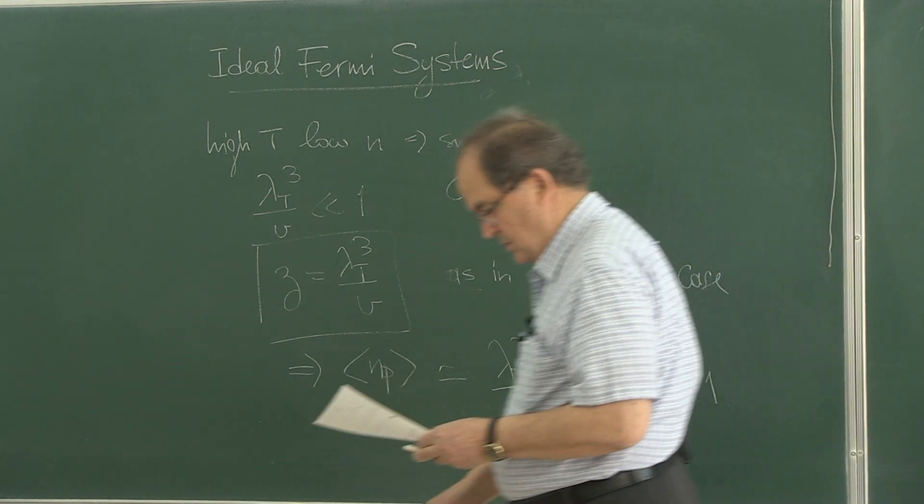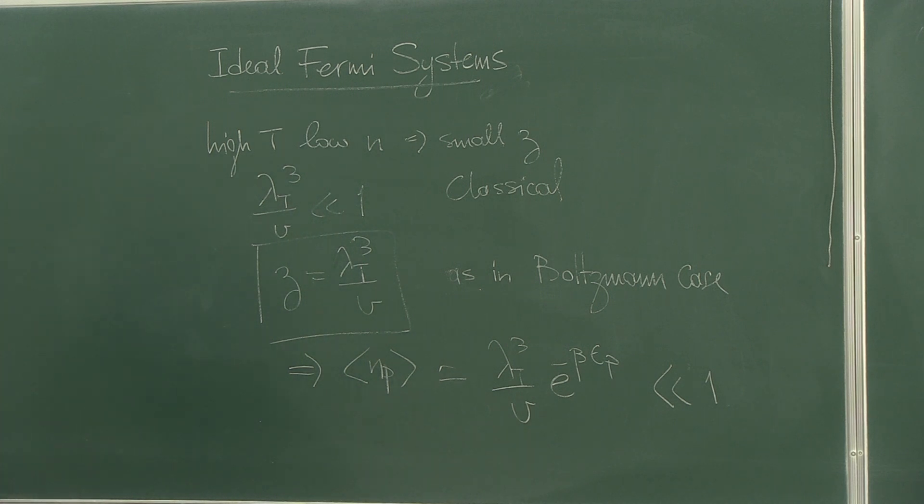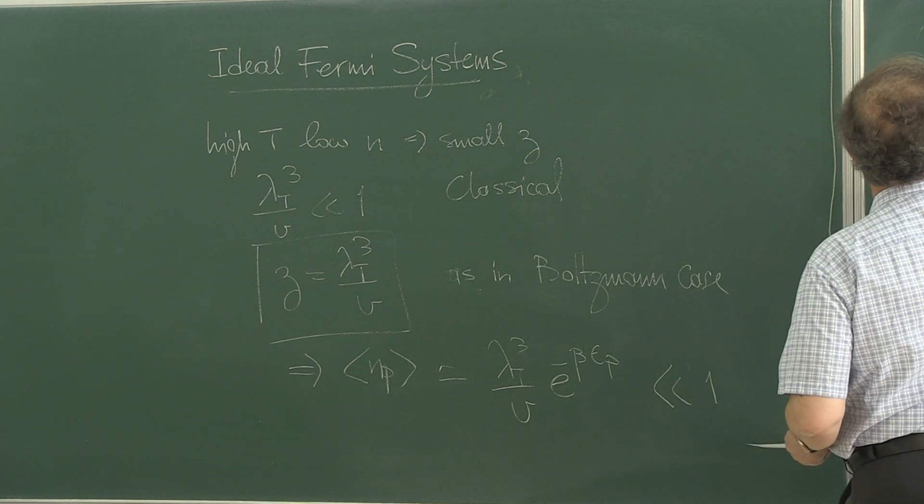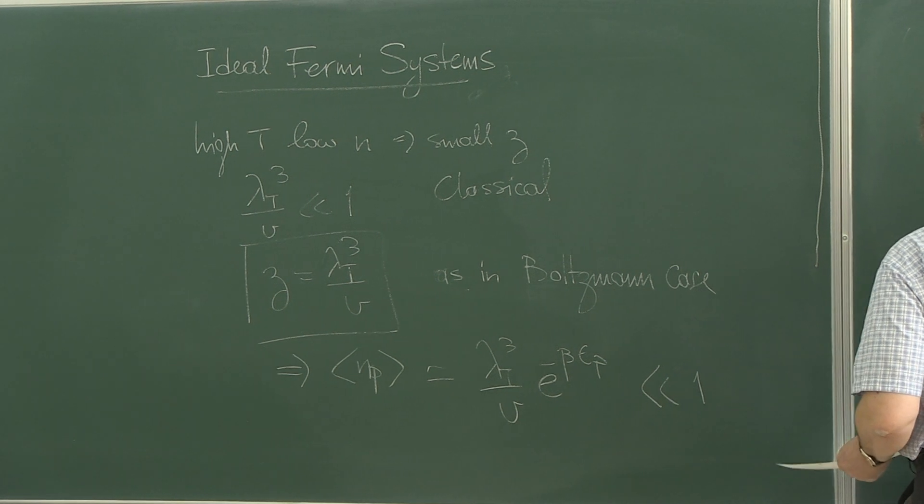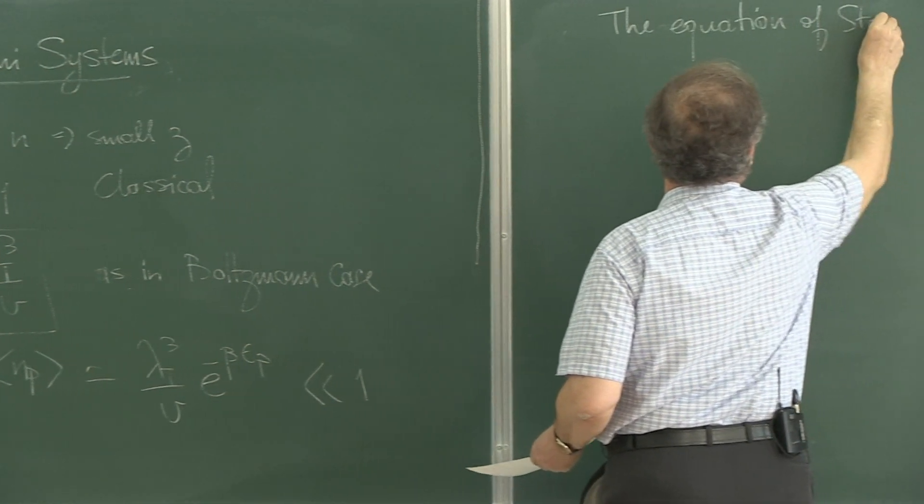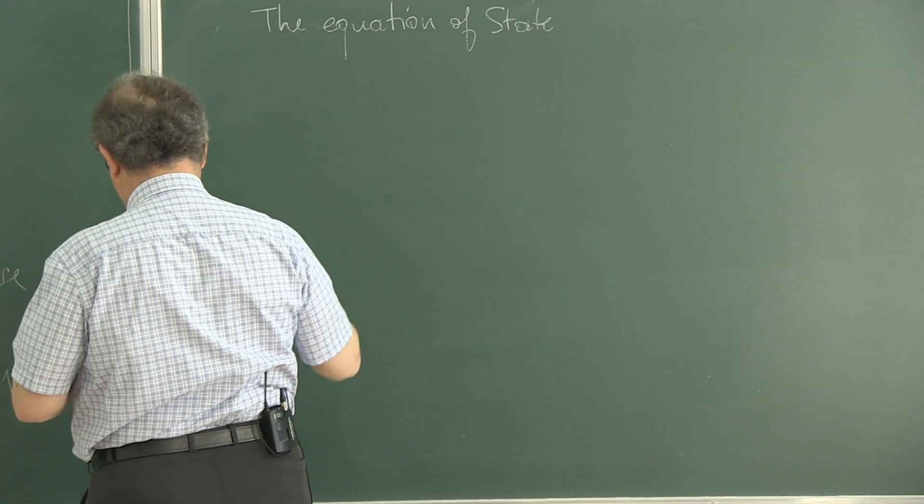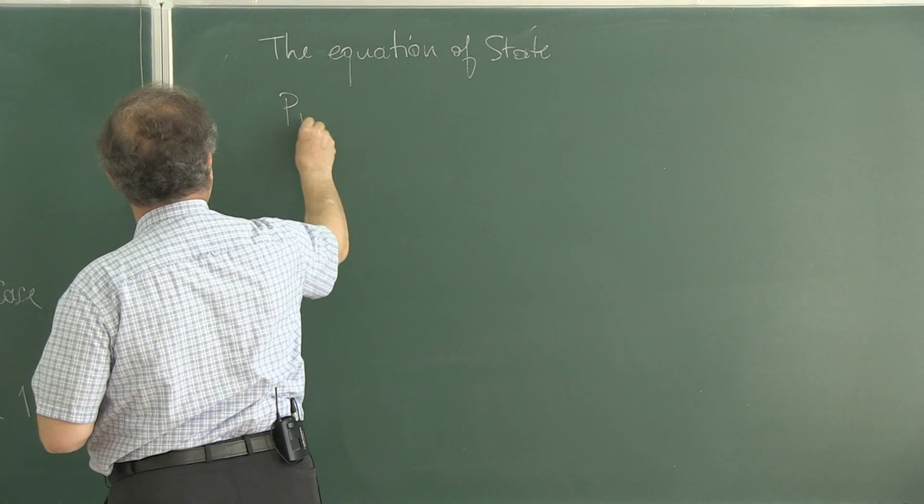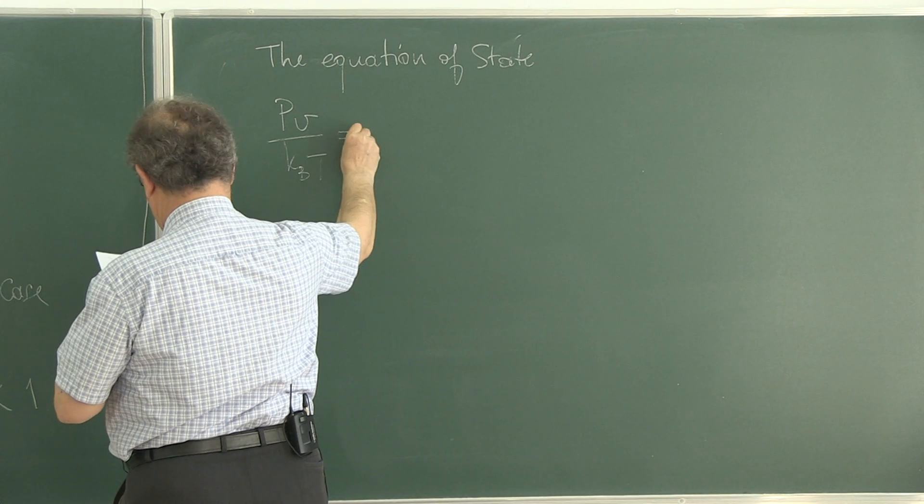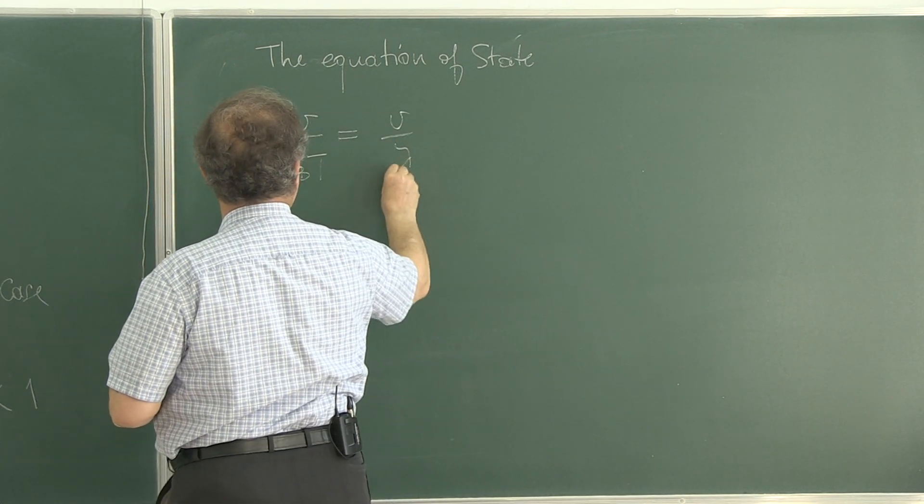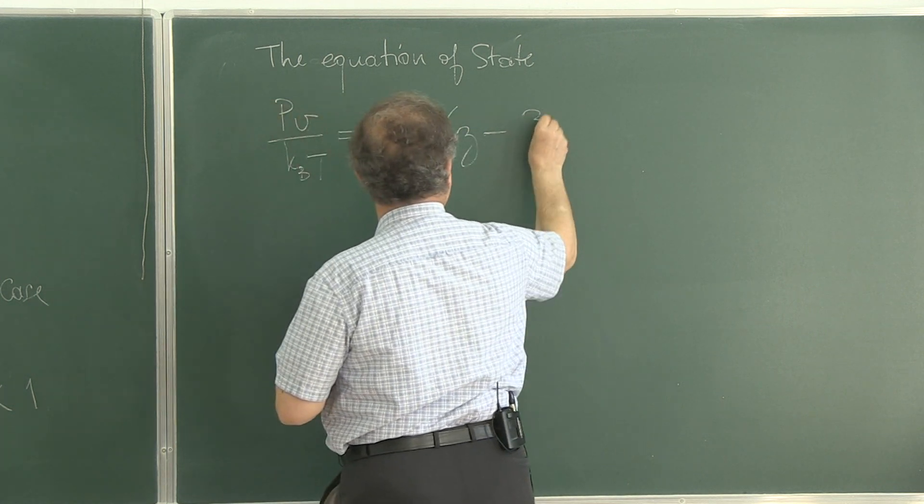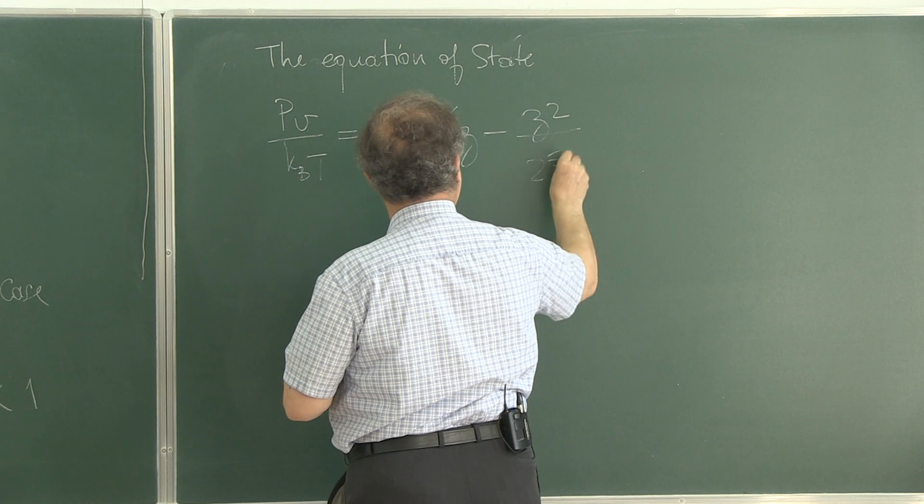Equation of state, that's important. So I am summarizing. You have the results. pv over kB T is v over lambda t cube z minus z squared over 2 to the 5 halves, etc.